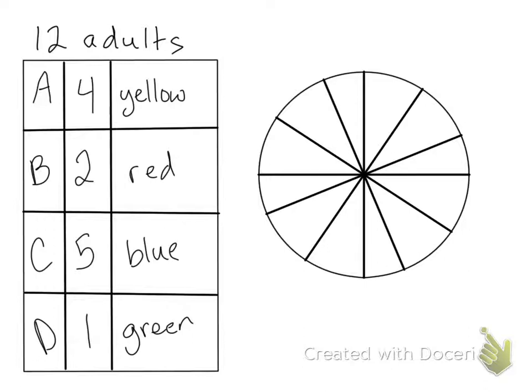We're going to pretend all these pieces are the same width. All right, so in our survey let's say only four adults chose option A. And I'm going to show that as yellow on my chart. So I'm going to take my yellow pencil and color in four twelfths of this circle.